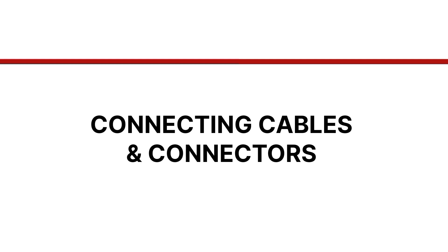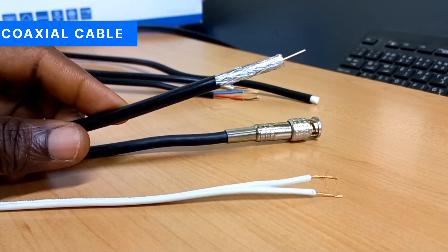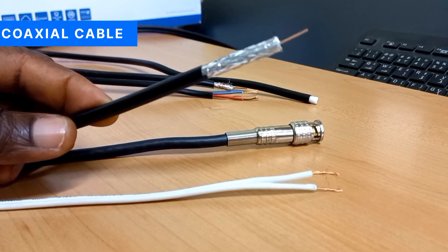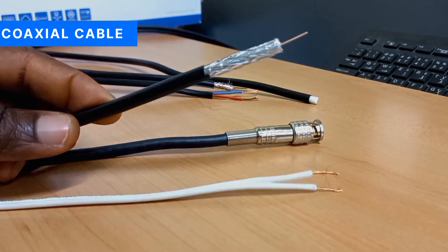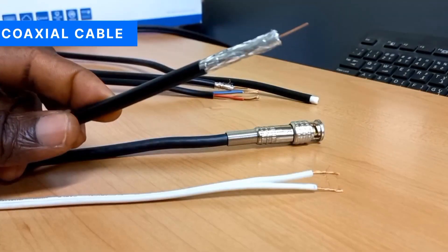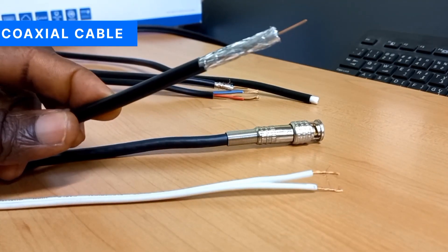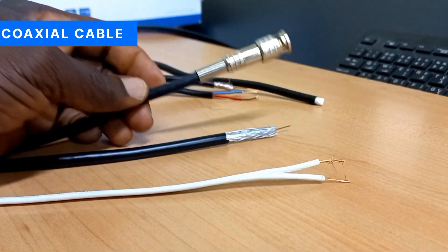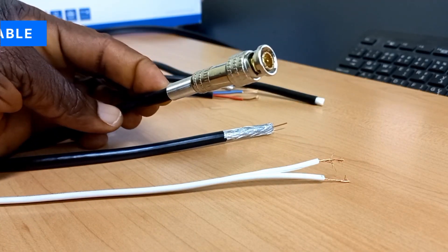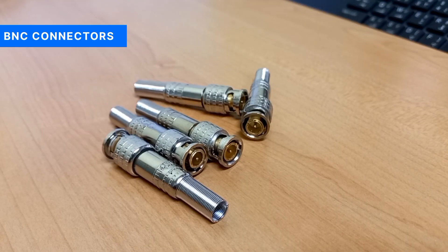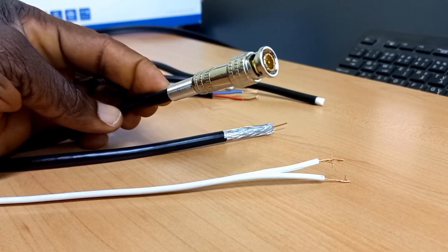Let's now look at the connecting cables and the kind of connectors used on the cables for both systems. This is a coaxial cable. It is the most appropriate cable for the connection of AHD or analog CCTV cameras for effective video transmission from the cameras to the video recorder. The ends of the coaxial cable are fitted with BNC connectors. Here are samples of BNC connectors. There are other designs of BNC connectors, but ultimately their points of connection to the camera and DVR all look the same.